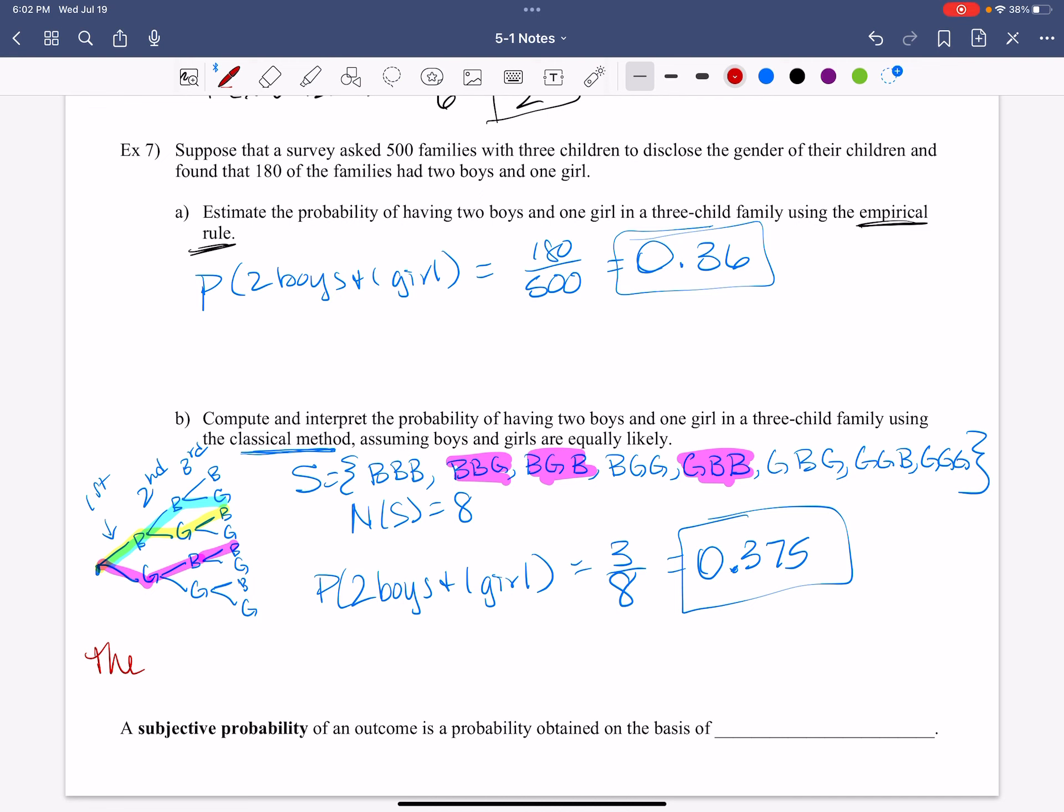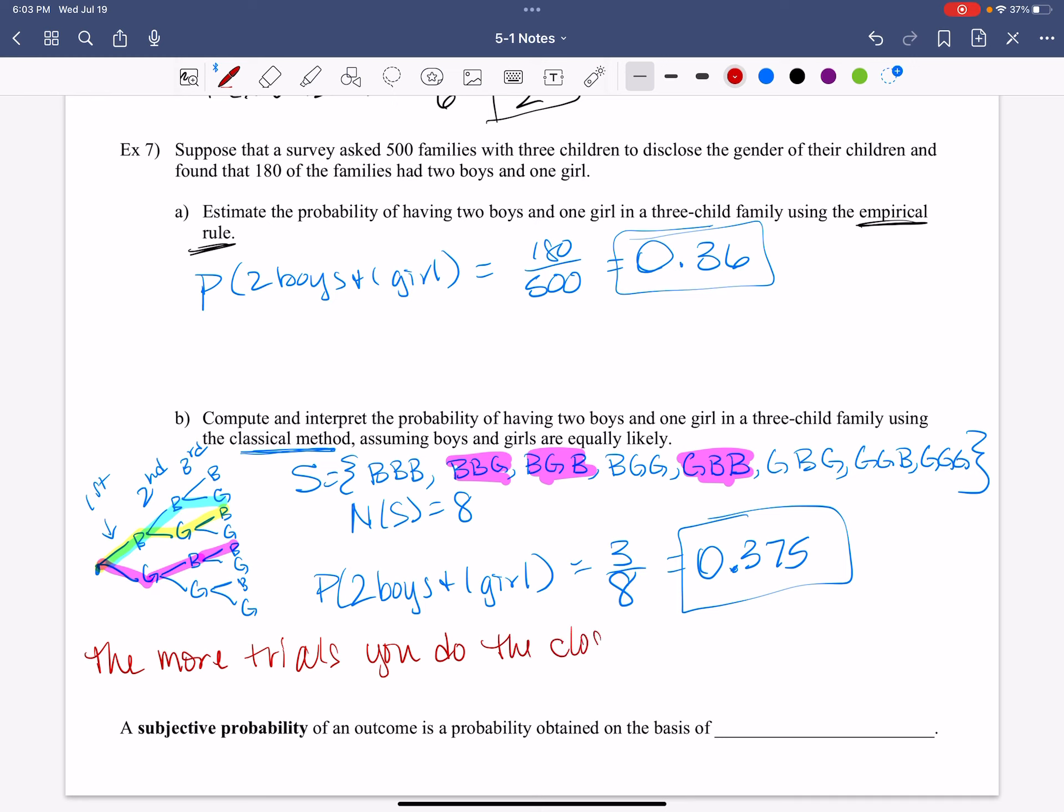So that's where I want to bring that into here. The more trials you do, the closer the empirical method gets to the classical method. That's the key. That's the law of large numbers.